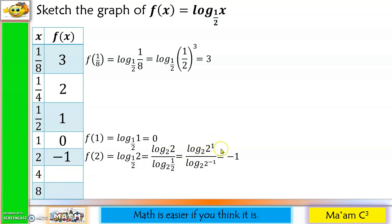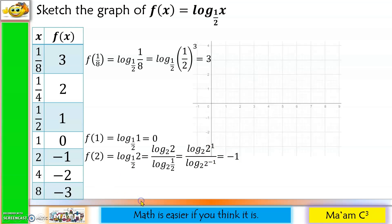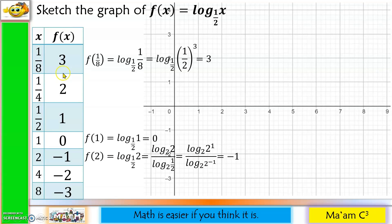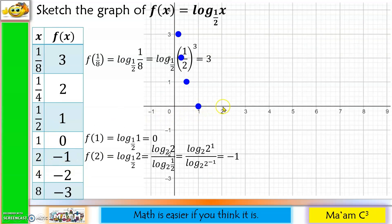For x = 4, that gives 2 squared, so 2 divided by negative 1 is negative 2. For x = 8, that is 2 cubed, so 3 divided by negative 1 is negative 3. Now let us plot: (1/8, 3), (1/4, 2), (1/2, 1), (1, 0), (2, negative 1), (4, negative 2), and (8, negative 3).